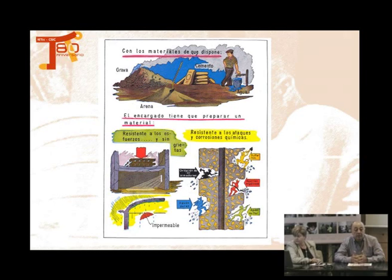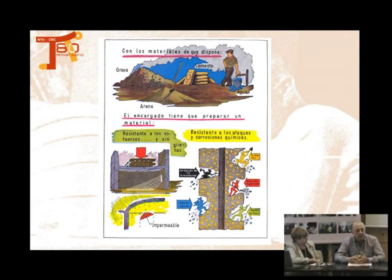Pero el cemento es un producto artificial, elaborado por el hombre, por lo tanto tiene la desgracia de que no dura mucho tiempo. Podemos estar hablando de 50, 100 años como mucho. No tenemos la suerte de disfrutar de monumentos históricos de hace muchos siglos, como catedrales o puentes romanos, que están construidos con piedra natural.